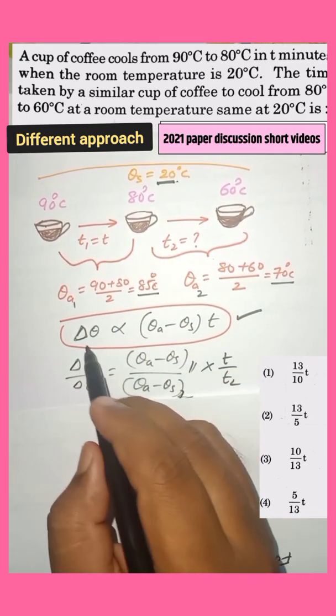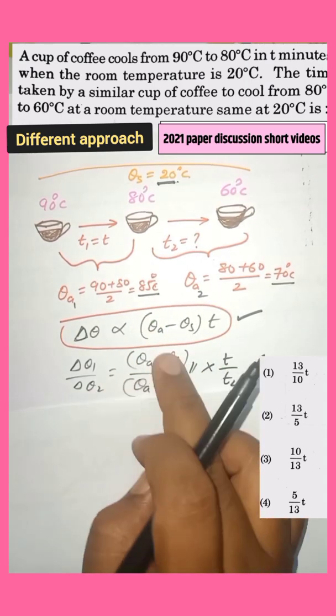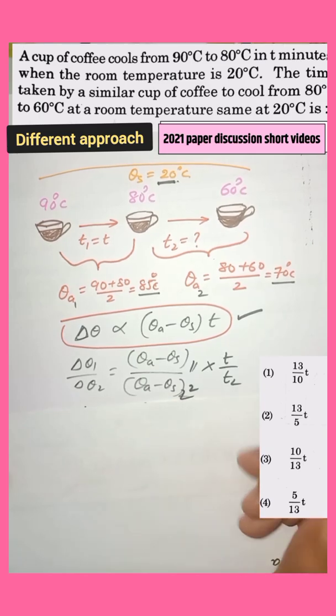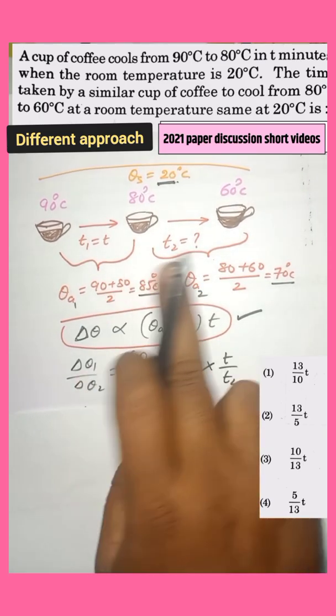So this is the basic formula. Therefore, delta theta 1 by delta theta 2 equals theta average minus theta surroundings in the first case by theta average minus theta surroundings in the second case, which is into T1. T1 is T here, T2 is T2.